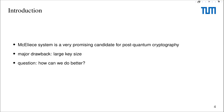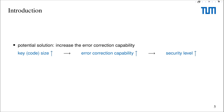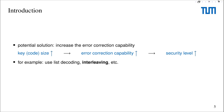So first, some motivation. The McEliece system is a very promising candidate for post-quantum cryptography. However, it has one very serious drawback, which is its large key size. The security level of the McEliece system is determined by the error correction capability of the Goppa code that we are using. If we are able to increase the error correction capability of the Goppa code while keeping the key size the same, then to achieve the same security level, we can use a Goppa code of a smaller size. To do this, various ways have been proposed — for example, using a list decoder for the Goppa code, or another technique called interleaving.